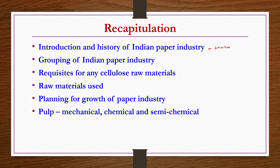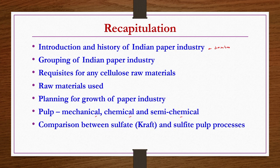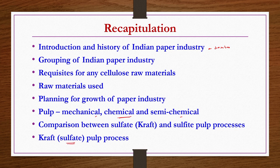We discussed that pulp can be made by mechanical, chemical, and semi-chemical methods. Among chemical methods, sulphate and sulphite pulp processes exist. We saw their comparison and then discussed in detail the sulphate or kraft pulp process — how taking wood-based raw material, pulp is produced using the kraft or sulphate process.